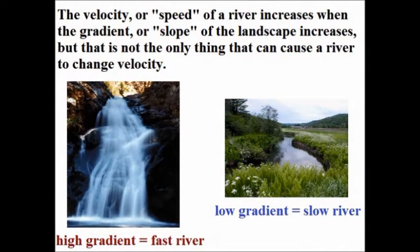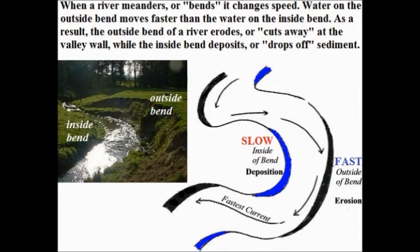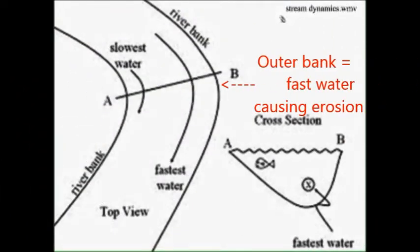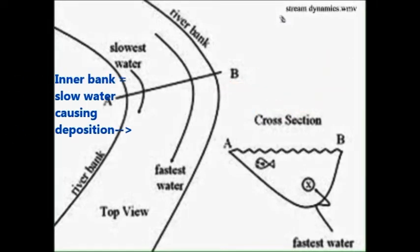The velocity, or speed, of a river increases when the gradient, or slope, of the landscape increases. But that is not the only thing that can cause a river to change velocity. When a river meanders, or bends, it changes speed. Water on the outside bend moves faster than the water on the inside bend. As a result, the outside bend of a river erodes or cuts away at the valley wall, while the inside bend deposits or drops off sediment. The outer bank is where the water is moving fastest, so it's eroding and the water will be deeper. The inner bend is where the water is moving slower, depositing sediment, and it's not going to be nearly as deep.